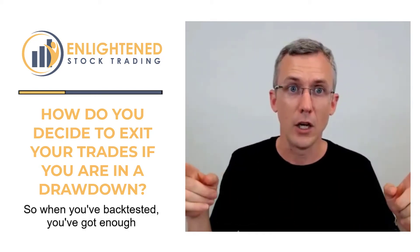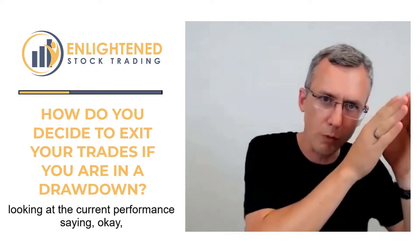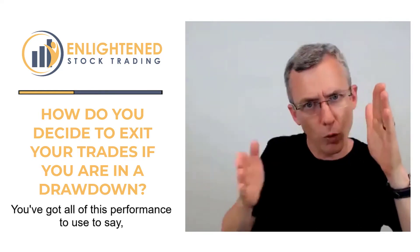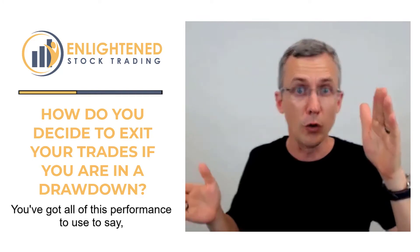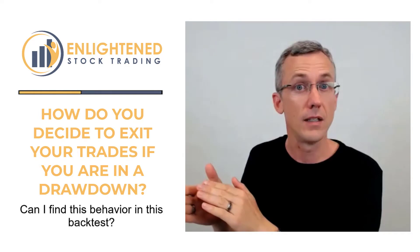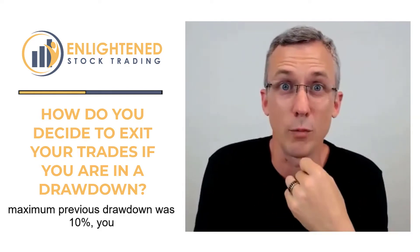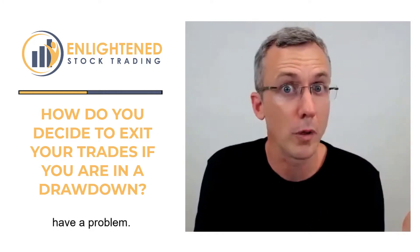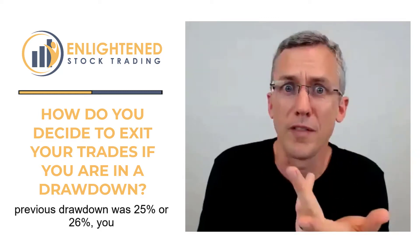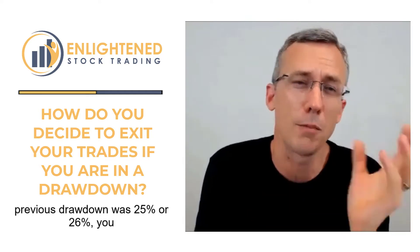So when you've back-tested, you've got enough data to say: I'm in drawdown — is that normal? Should I stop the system? You've got all of this performance history to use to ask, can I find this behavior in this back-test? So if your current drawdown is 30% and the maximum previous drawdown was 10%, you have a problem. But if your current drawdown is 25% and your maximum previous drawdown was 25%, 24%, or 26%, you probably don't have a problem.